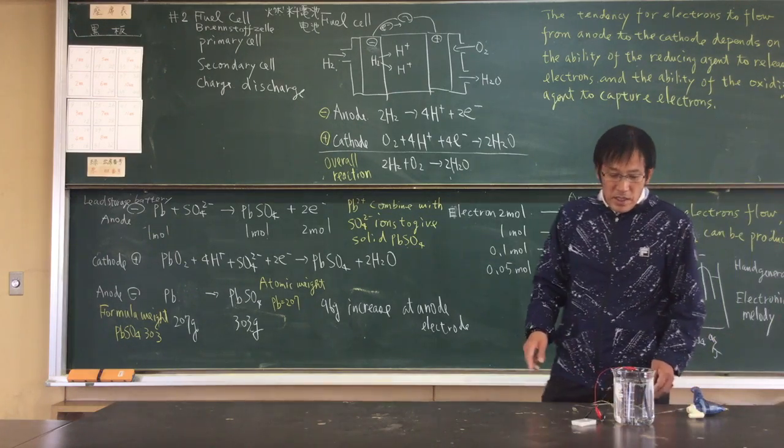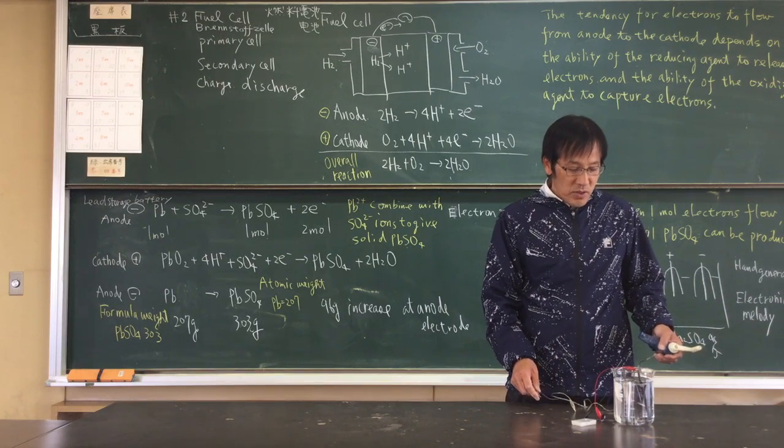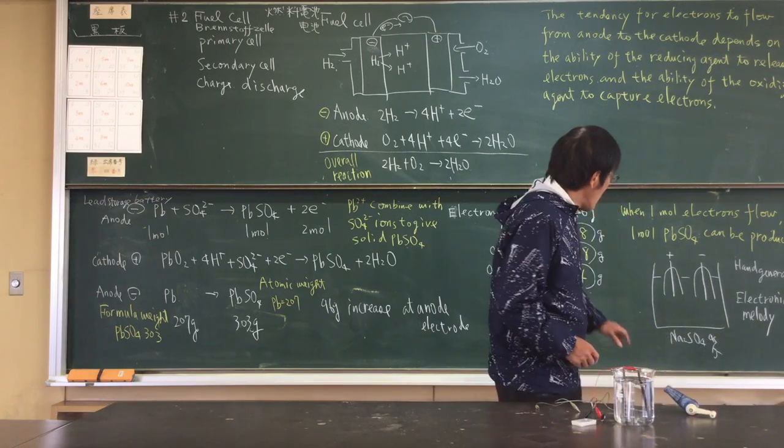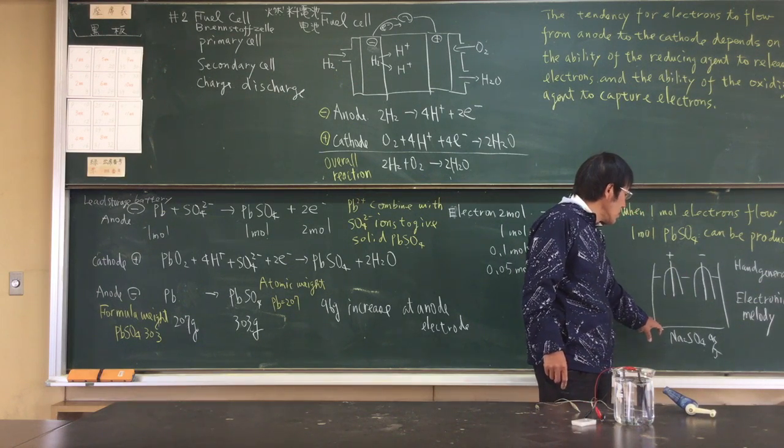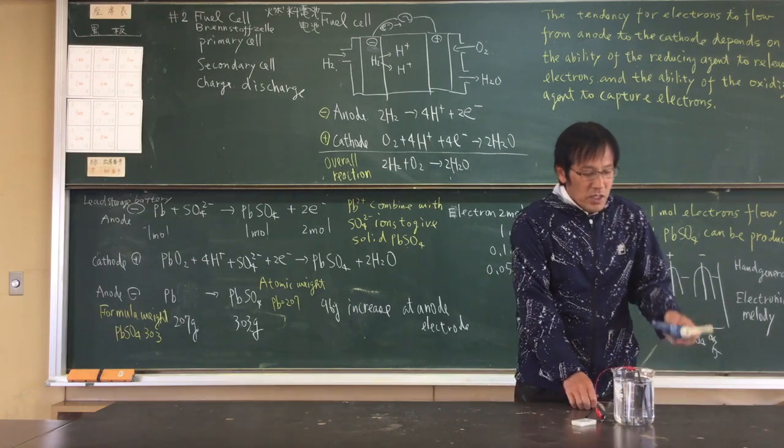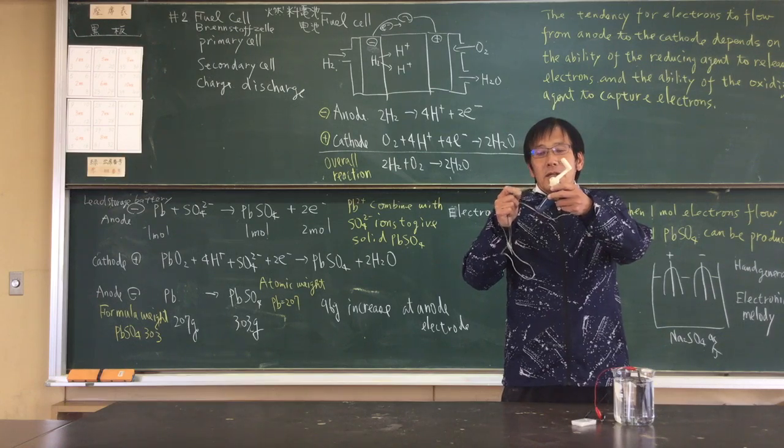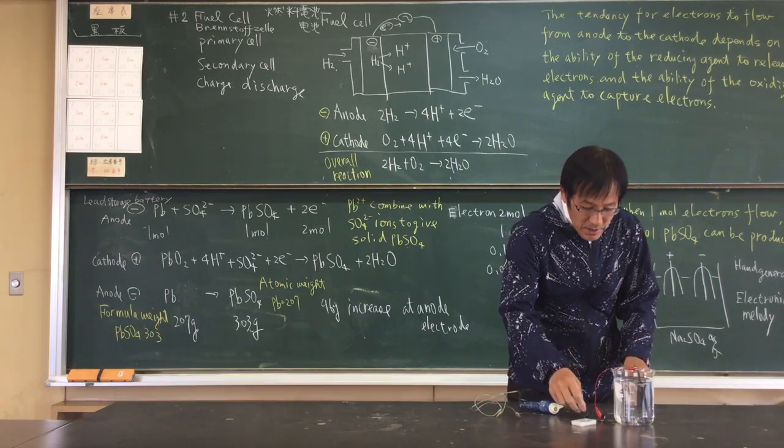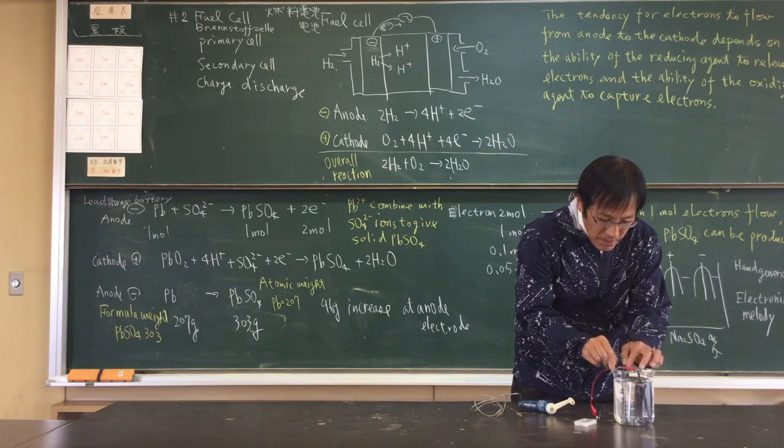Here, this is the fuel cell demonstration. Carbon electrodes. Electrolyte is sodium sulfate. Using electrolysis to produce hydrogen and oxygen. Connect to the carbon.